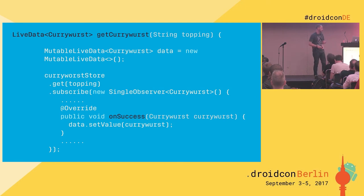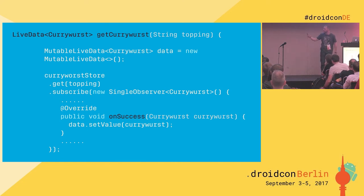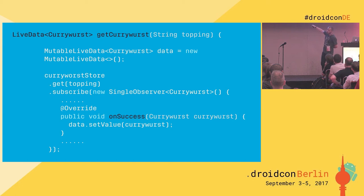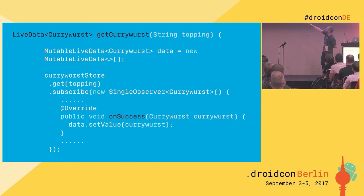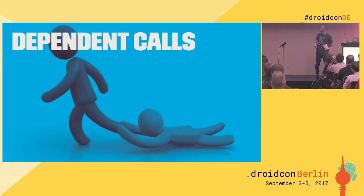Similarly, outside of a live data object, you have a method returning LiveData of currywurst, pass in your topping, create the MutableLiveData structure, make a call to your store, and on successful return set the value on the live data — so any caller will get the data set on the live data object asynchronously.